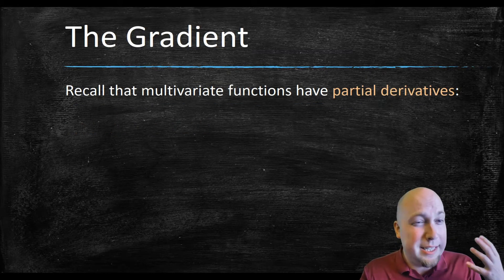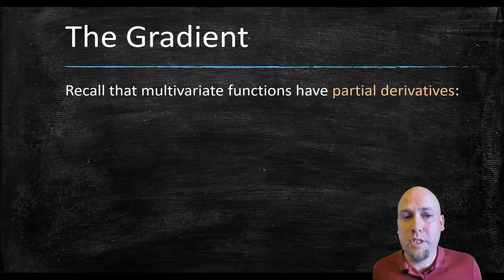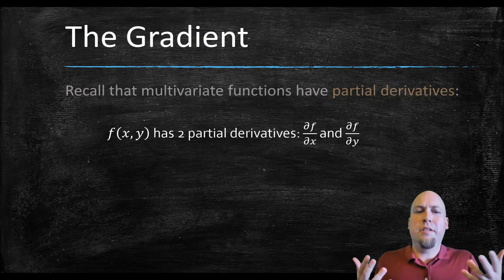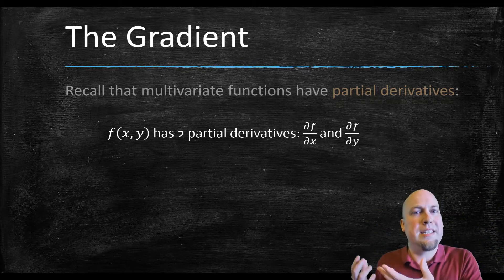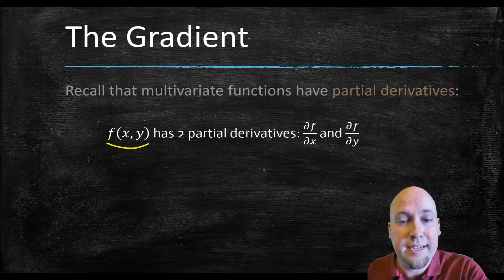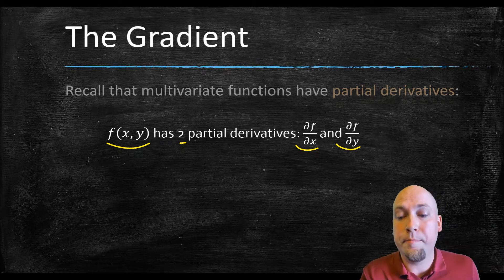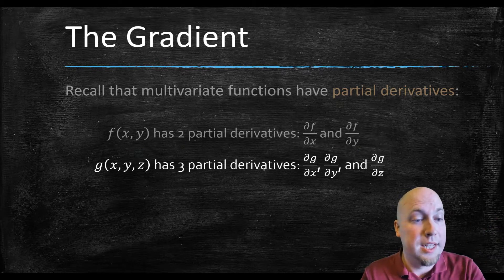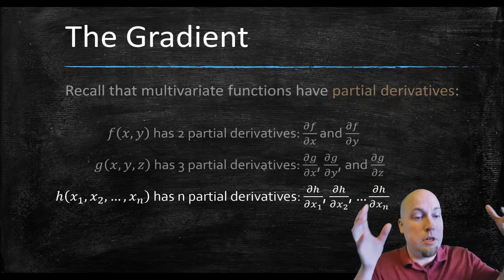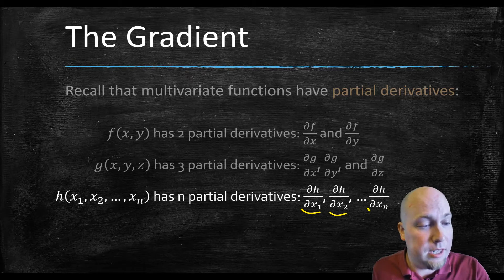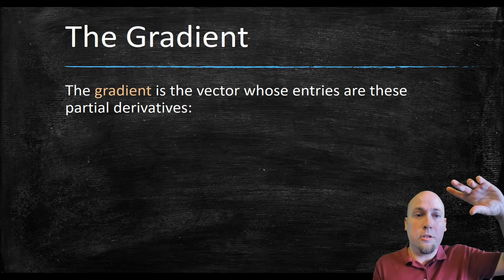Before we can get to that, we've got to introduce something called the gradient, which is going to be the main workhorse for actually letting us compute directional derivatives toward the end of this lecture. The gradient of a function is built off of the function's partial derivatives. To remind you: partial derivatives are computed by treating all variables except one as constants and taking the derivative with respect to that variable.